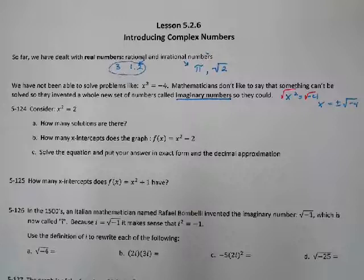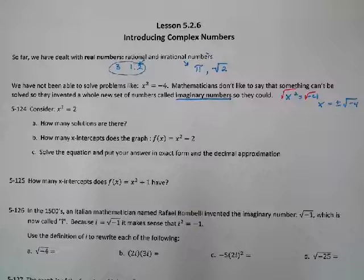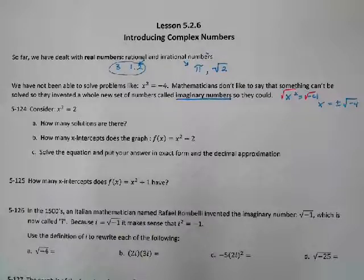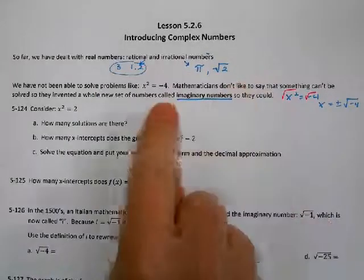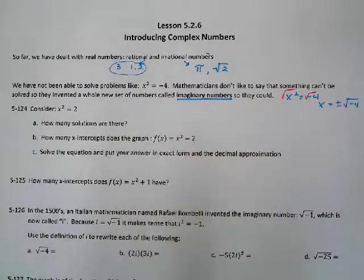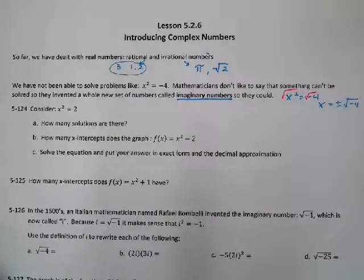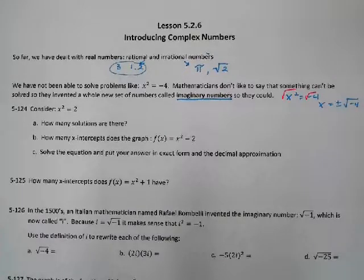Mathematicians really don't like when you can't solve something. So about 500 years ago, there's this guy who said, 'I hate saying there's no solution — there's got to be some solution out there.' So he made up a whole new set of numbers called the imaginary numbers. Imaginary numbers are numbers that, unlike real numbers, you can't point out on a number line. That's the definition of an imaginary number — it's not on the number line, but it's been posited that these numbers actually exist and we can do stuff with them.